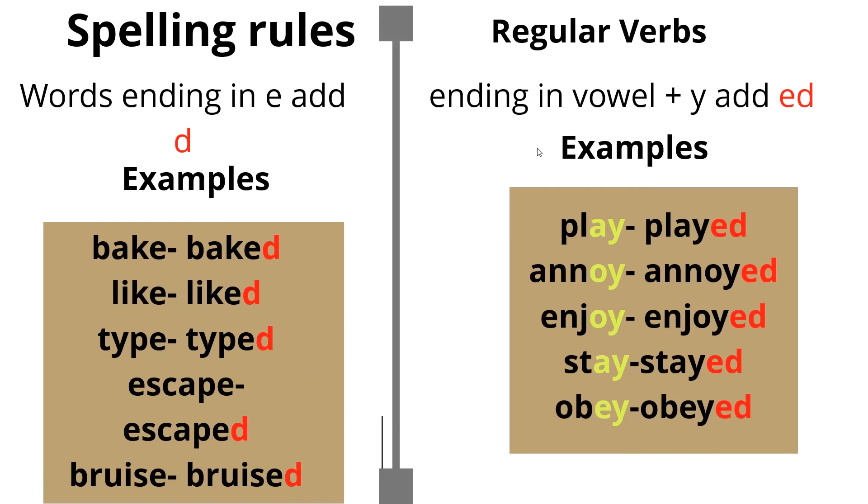Words ending in vowel plus Y, we add ED. Here is our vowel, which is A, and Y. Play, played. Annoy, annoyed. Enjoy, enjoyed. Stay, stayed. Obey, obeyed.